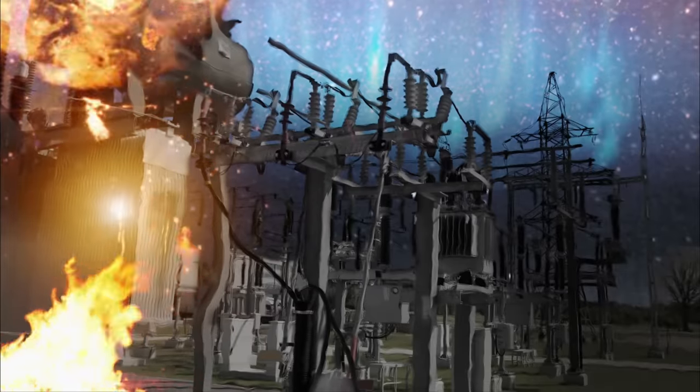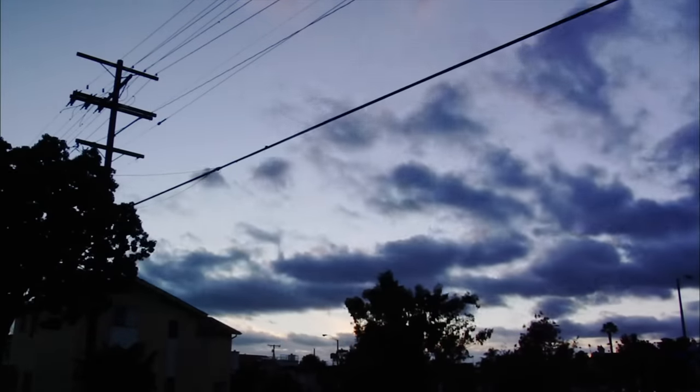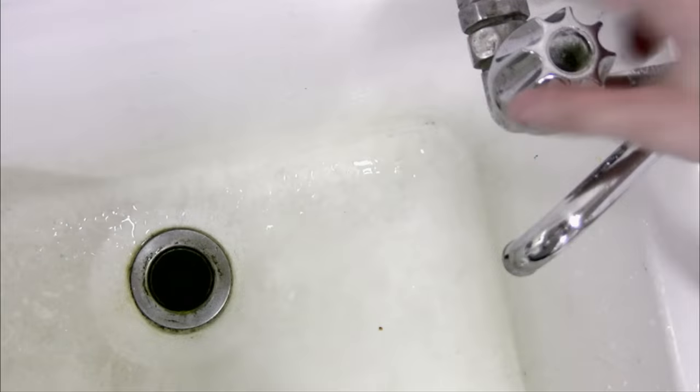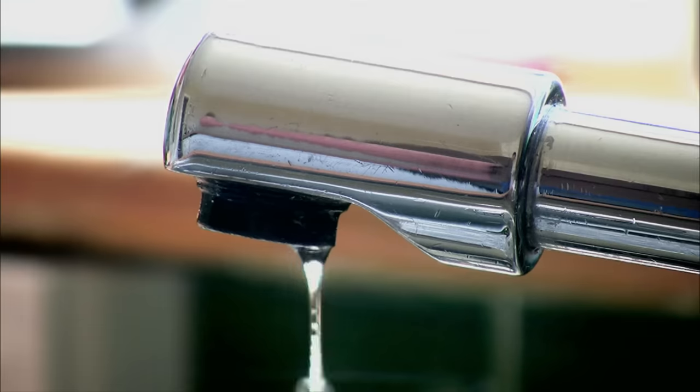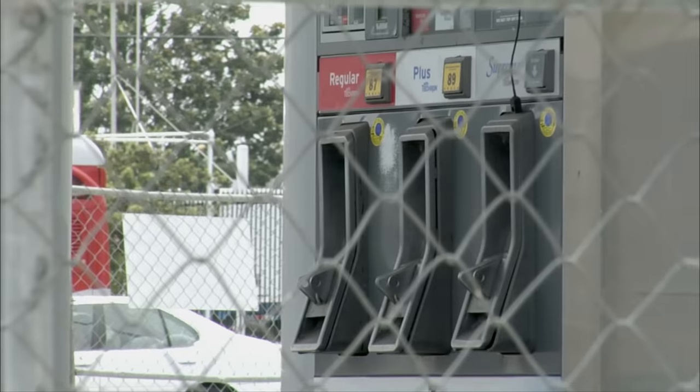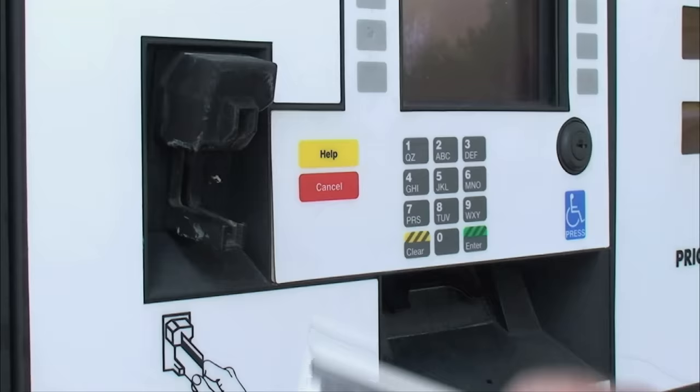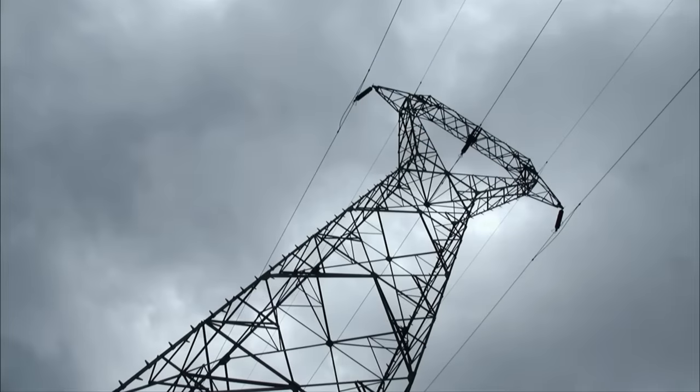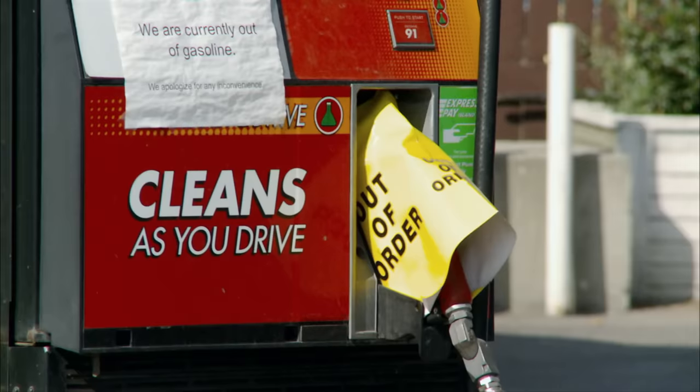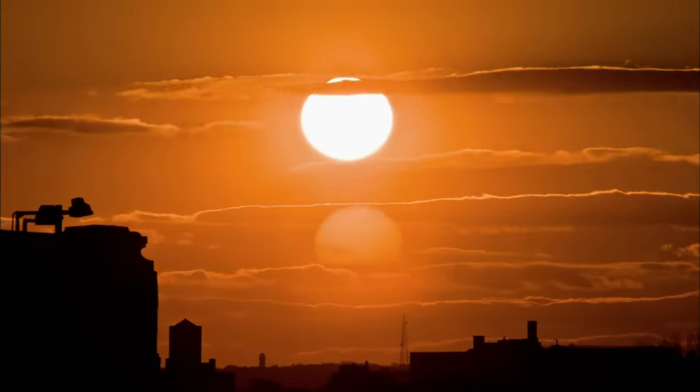We could damage enough transformers in one storm that it would take several years of the entire world's manufacturing capability to replace all of those damaged transformers. Without power, infrastructure collapses. The first thing to go, water. Without electricity for pumps, city tap water will go dry within a day. The same is true for gas pumps and gas stations. Without fuel, national trucking stops. So do food deliveries to grocery stores. People can't leave the cities because their gas tanks are empty. They can't use their credit cards or ATMs without electrical power and phone connections. No power, no gas, no food, no water. And no end in sight.